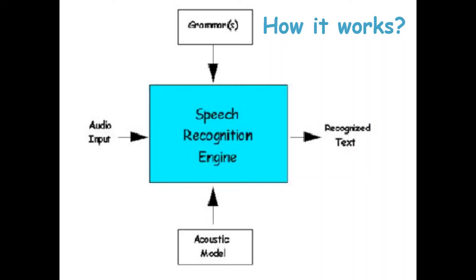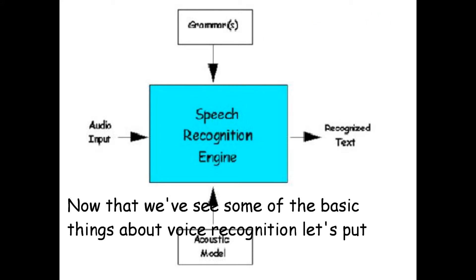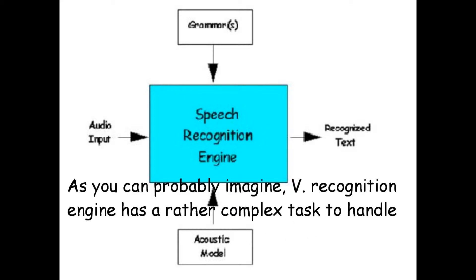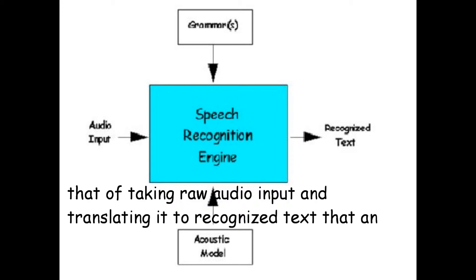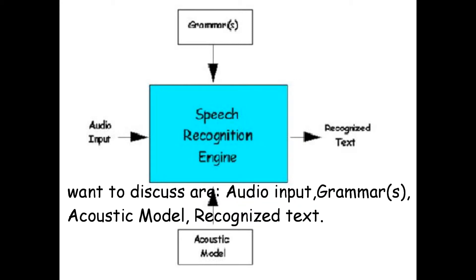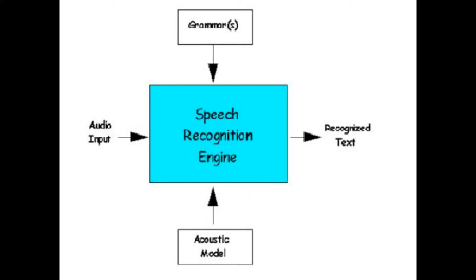Let's analyze how voice recognition works. Now that we've seen some of the basic things about voice recognition, let's put them together and take a look at how the voice recognition process works. The voice recognition engine has a rather complex task: taking raw audio input and translating it to recognized text that an application understands. As shown in the diagram, the major components are audio input, grammar, acoustic model, and recognized text.